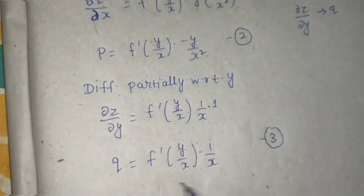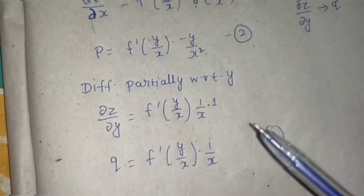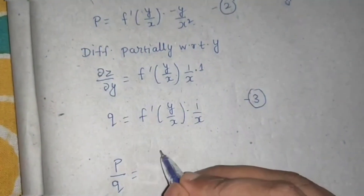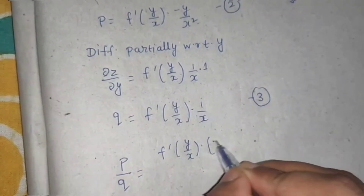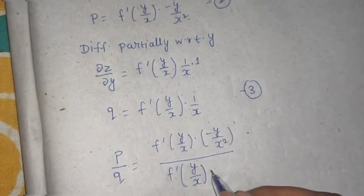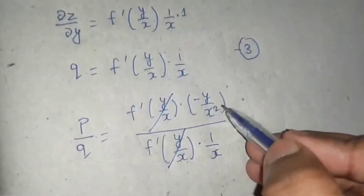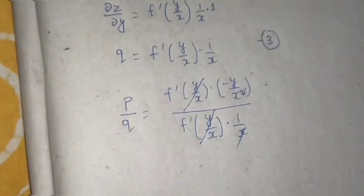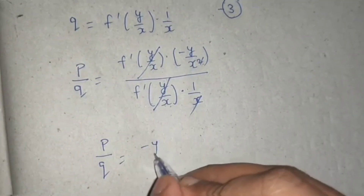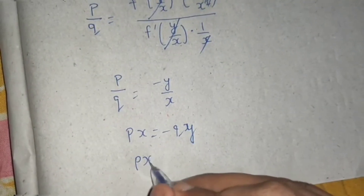As you can see, one thing is common in equations two and three — the arbitrary function f'(y/x). So we simply divide both equations. Dividing equation two by equation three: p/q = [f'(y/x) · (-y/x²)] / [f'(y/x) · (1/x)]. The f'(y/x) cancels, and one x cancels, giving p/q = -y/x. Cross-multiplying: px = -qy, or px + qy = 0.